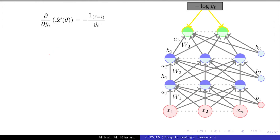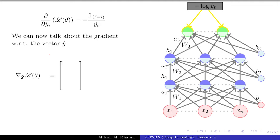So this is the quantity we have computed — the partial derivative of the loss with respect to one of the output units. Now, if I want the gradient with respect to y_hat, that would be a vector which is a collection of partial derivatives. I am interested in the gradient of the loss function with respect to the vector y_hat = [ŷ_1, ŷ_2, ..., ŷ_k]. This gradient is going to be a collection of the partial derivatives with respect to ŷ_1, ŷ_2, and so on.